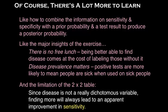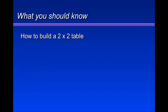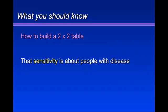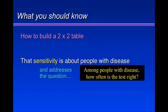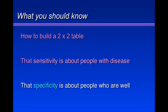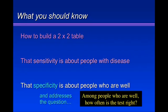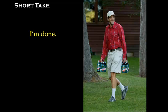But for now, you ought to be clear about three things: how to build a 2x2 table and where the TPs, FPs, FNs, and TNs go; that sensitivity is about people with disease and addresses the question — among people with disease, how often is the test right?; and that specificity is about people who are well and addresses the question — among people who are well, how often is the test right? Well, now I'm really done. So are you. See ya.